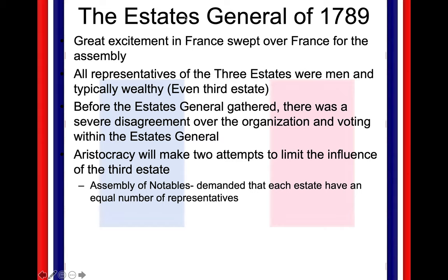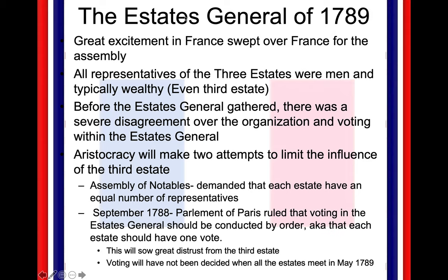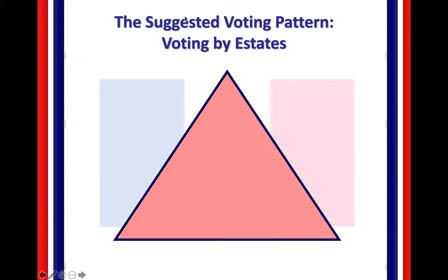The Assembly of Notables demanded that each estate have an equal number of representatives. In September of 1788, the Parliament of Paris ruled that voting in the Estates General should be conducted by order, with each estate having one vote. This disagreement over voting between the three estates is making things bad, mainly because the first two estates are trying to take power away from the third estate.